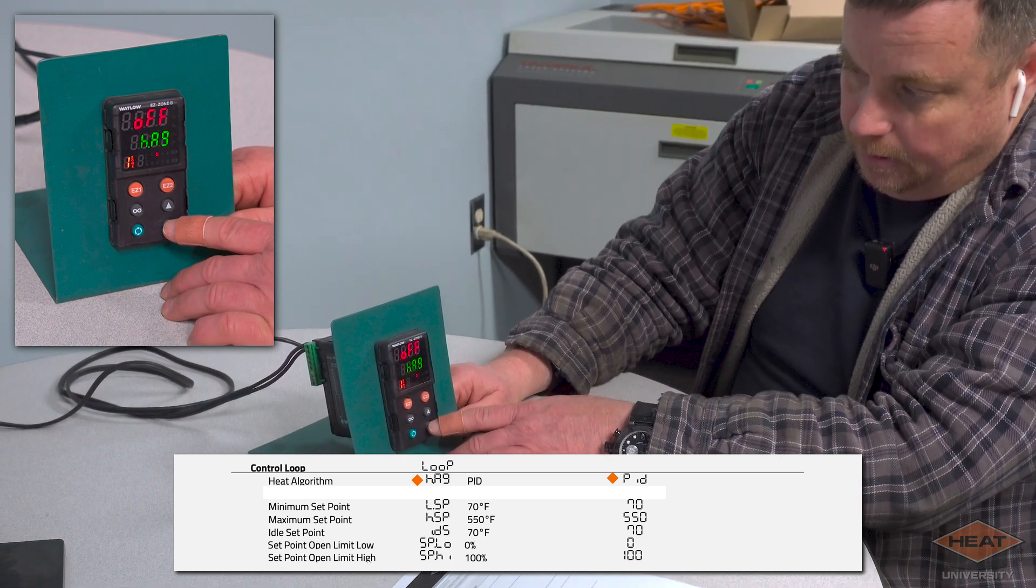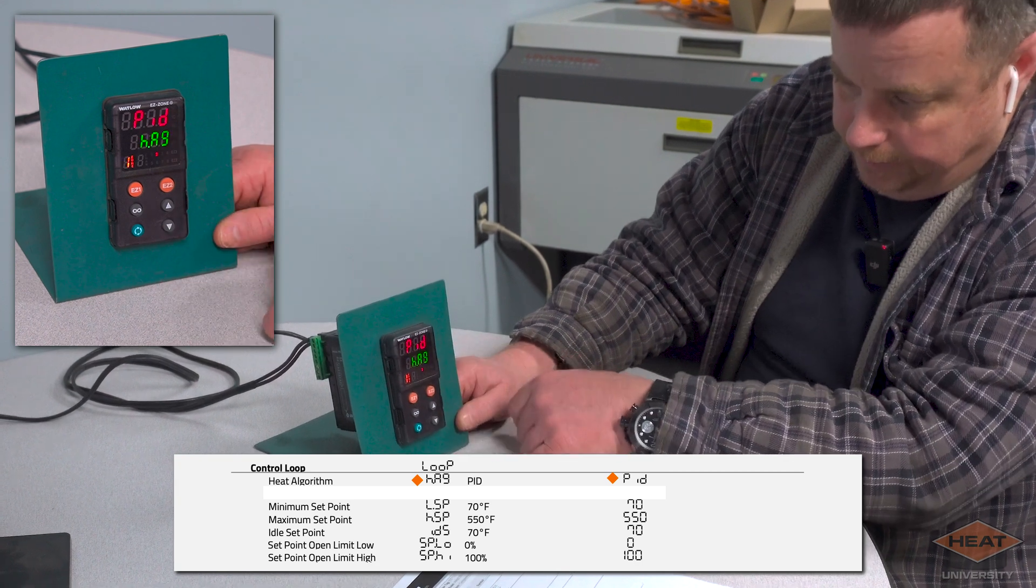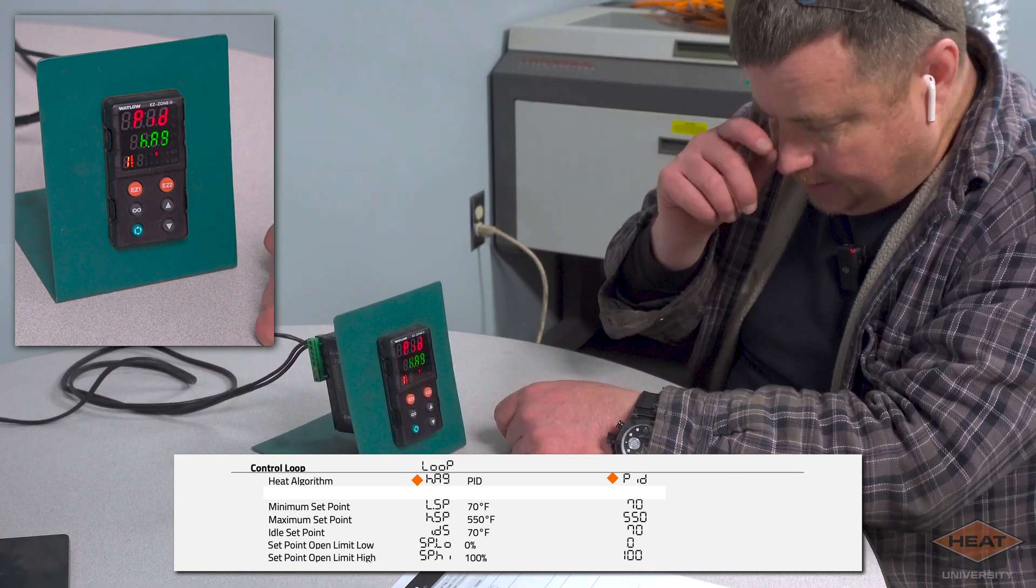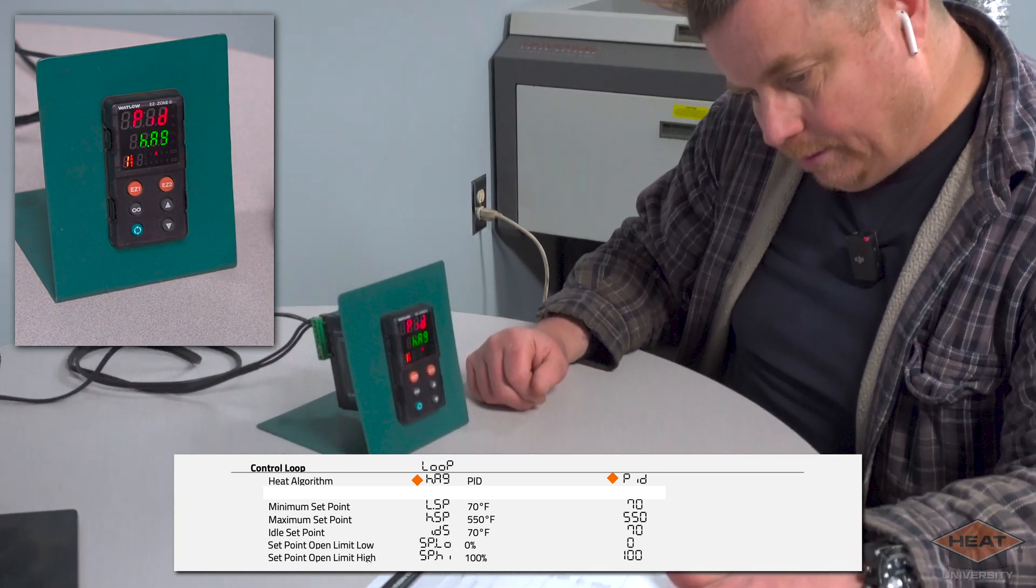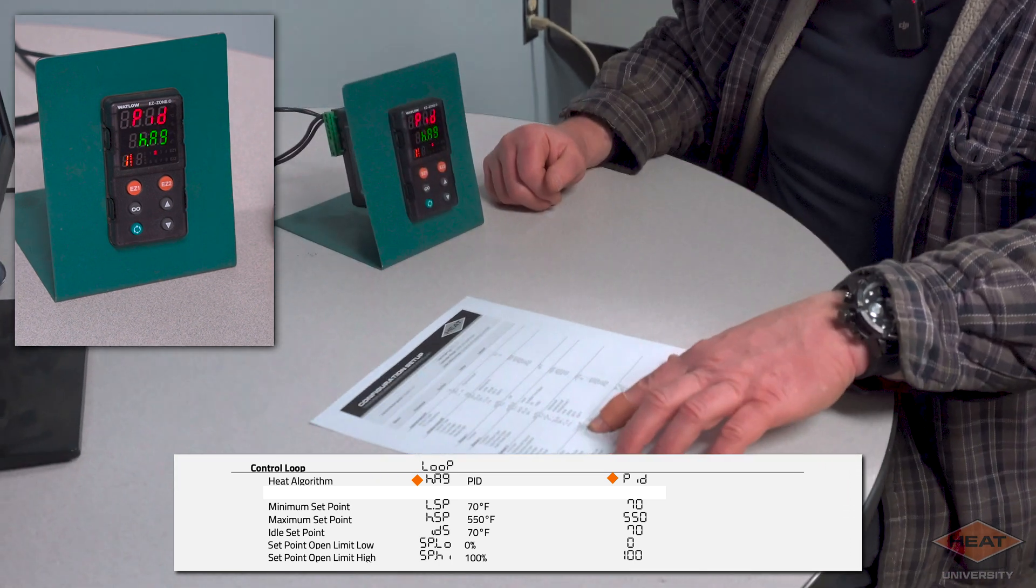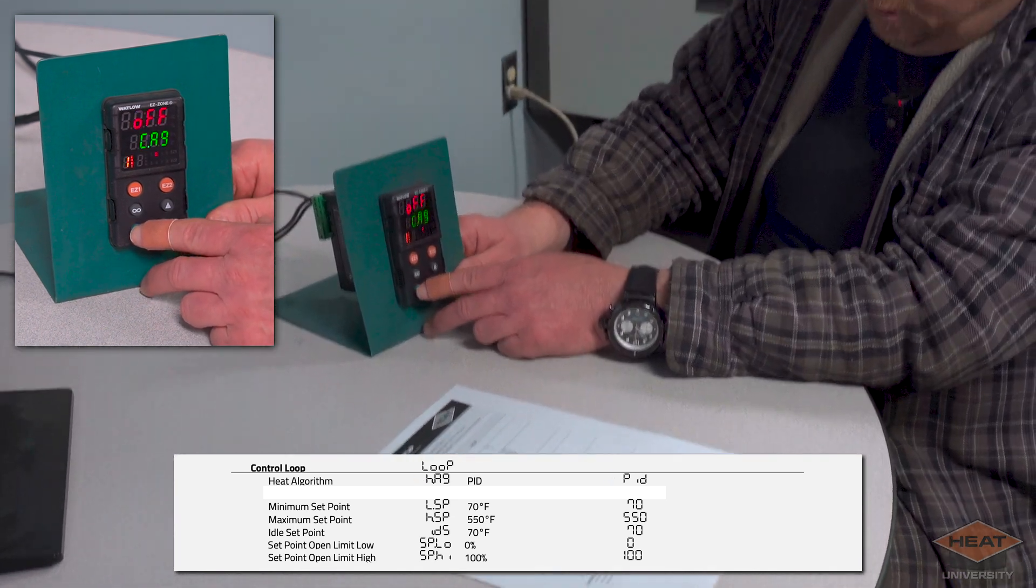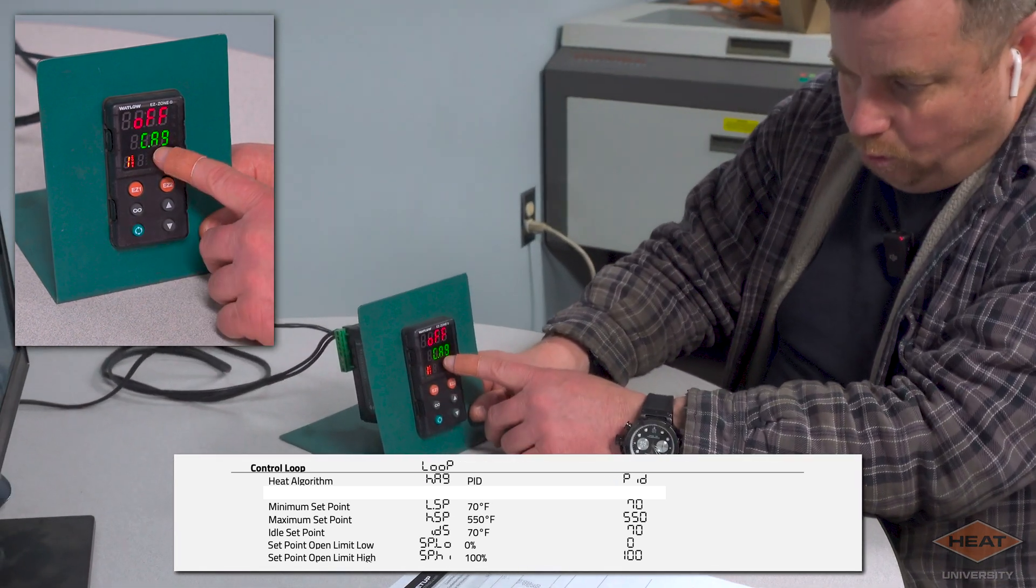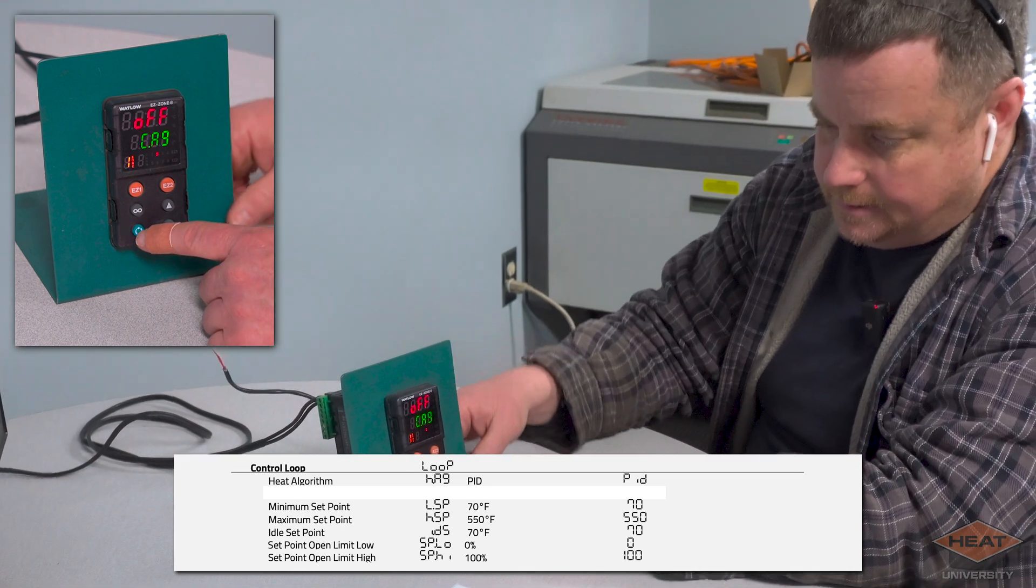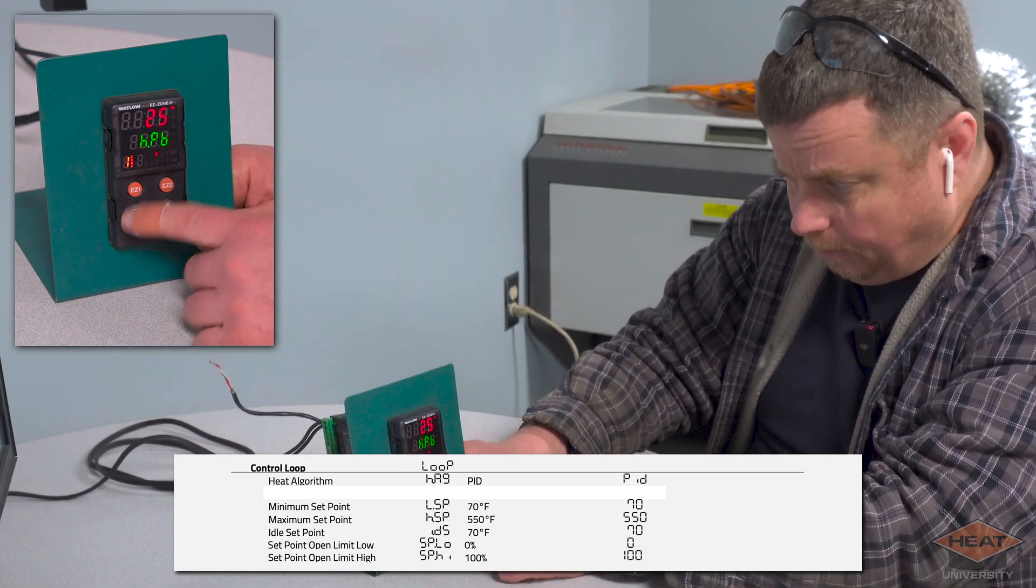This could also be off, it could be on-off control, but typically it'll be PID and that will be on your setup sheet. You can see right here, heat algorithm PID.